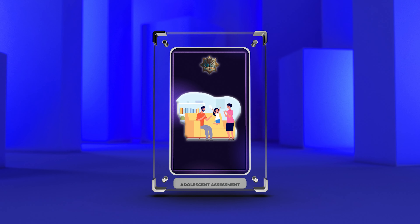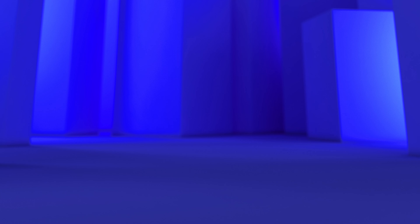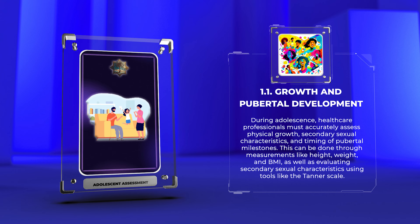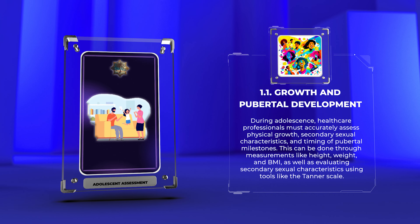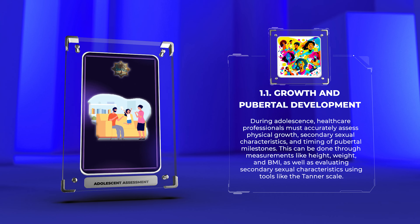During adolescence, healthcare professionals must accurately assess physical growth, secondary sexual characteristics, and timing of pubertal milestones. This can be done through measurements like height, weight, and BMI, as well as evaluating secondary sexual characteristics using tools like the Tanner scale.